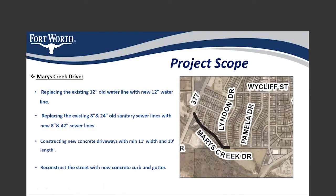Now let us talk about the proposed improvements on each street separately. On Nearest Creek, we are going to replace the 12-inch old waterline with a new 12-inch waterline. We are also replacing the existing 8-inch and 24-inch sanitary sewer line with new 8-inch and 42-inch sewer line. After that, we are going to construct new concrete driveways with a minimum 11-foot width and 10-foot length. At the end, we are reconstructing the street with new concrete curb and gutter.